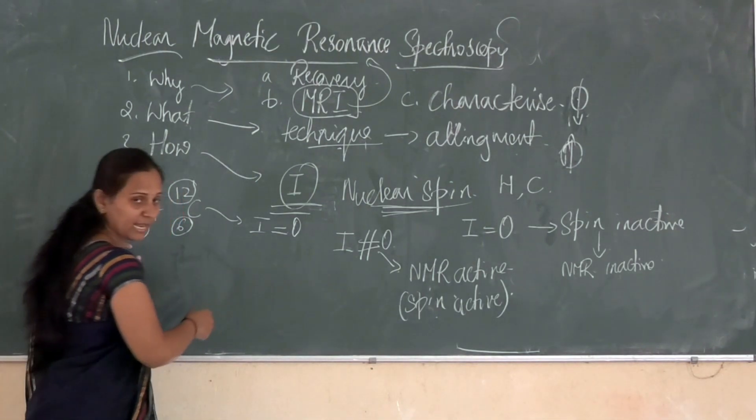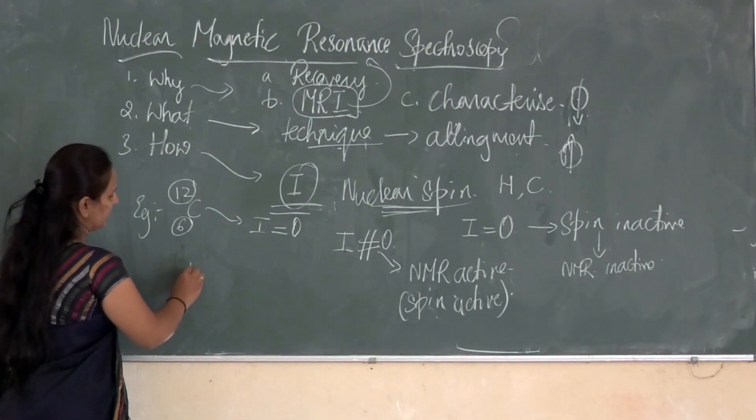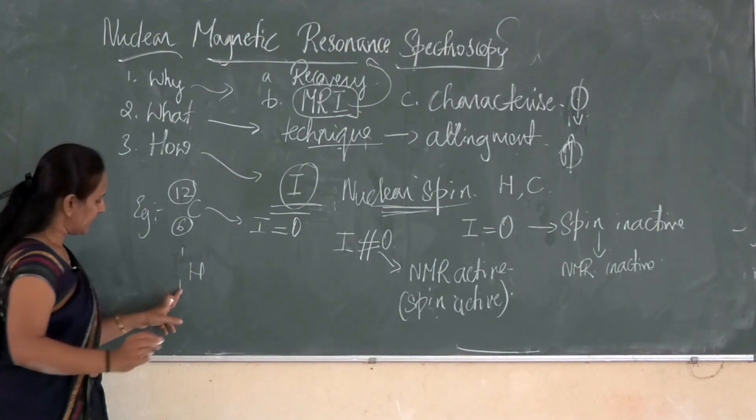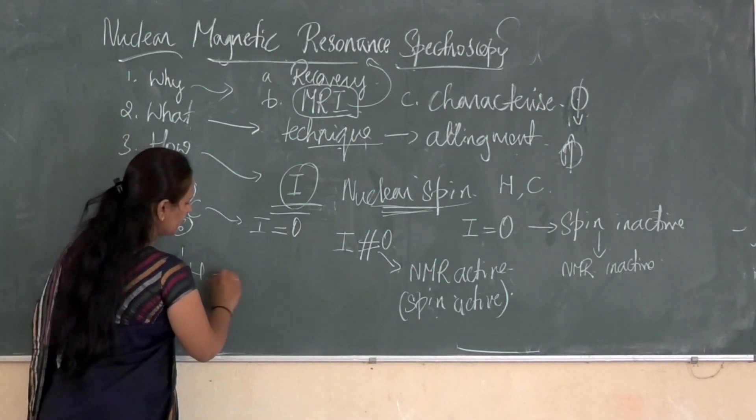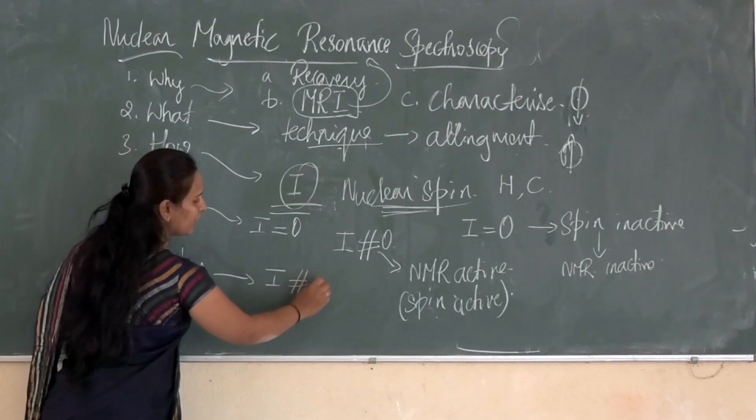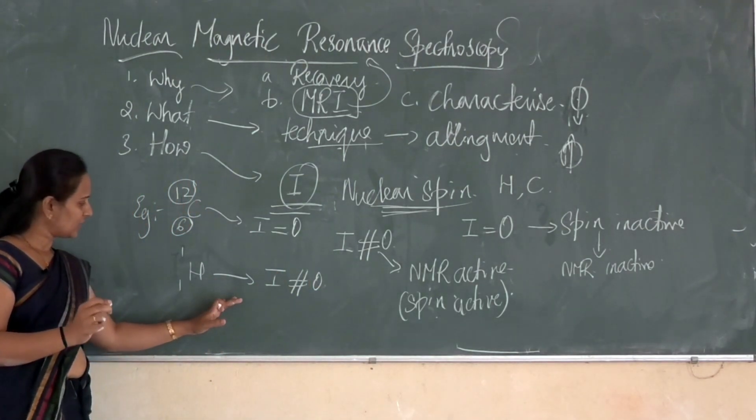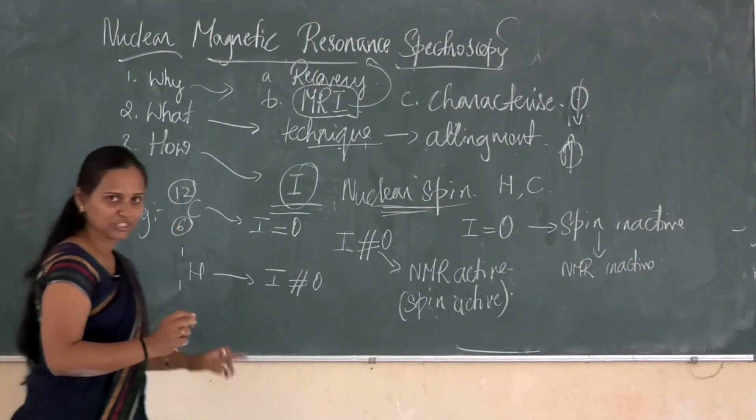If I want to give example for NMR active nuclei, that is, proton. Here, the atomic number as well as the mass number will be odd. Such type of nuclei spin will not be equal to zero. Such nuclei are NMR active nuclei.